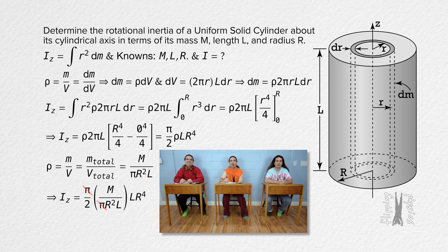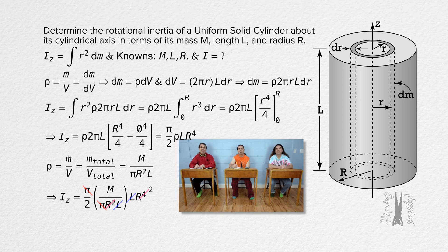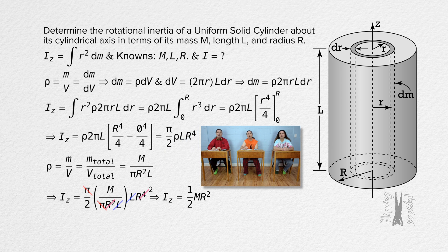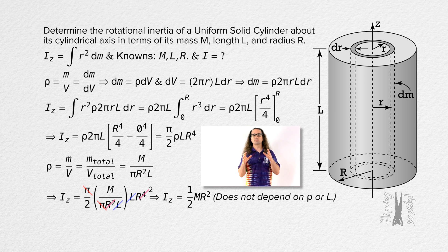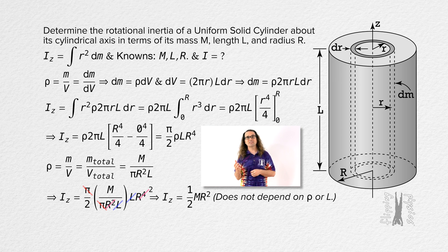Pi cancels out, capital L cancels out, and capital R squared cancels out as well. We are left with the moment of inertia of a uniform solid cylinder about its cylindrical axis equals one-half times the mass of the cylinder times the radius of the cylinder squared. So it does not depend on density or the length of the cylinder? Nope. The rotational inertia of a uniform solid cylinder about its cylindrical axis only depends on the mass and radius of the cylinder. Thank you very much for learning with me today.